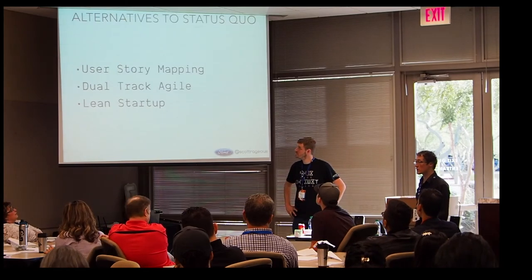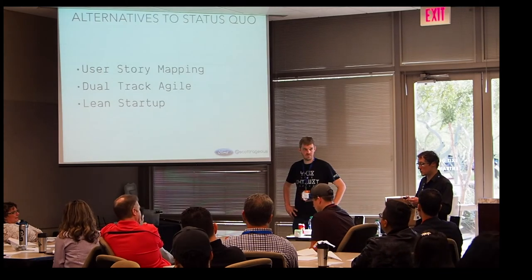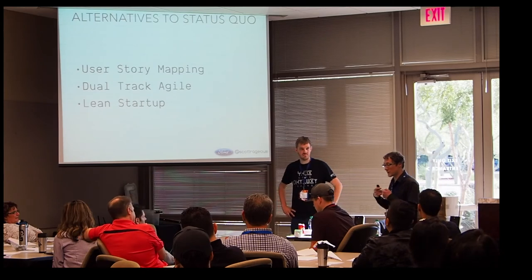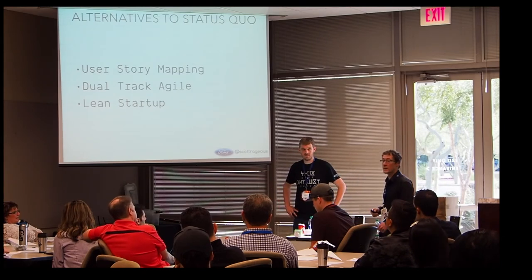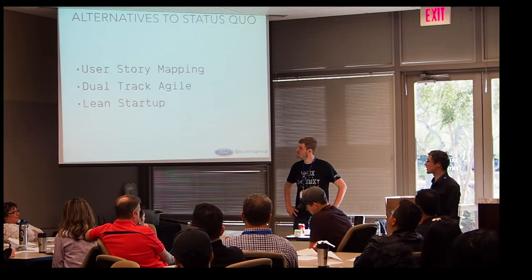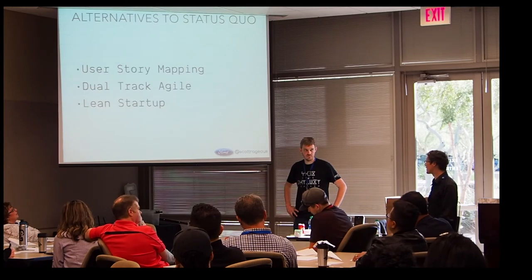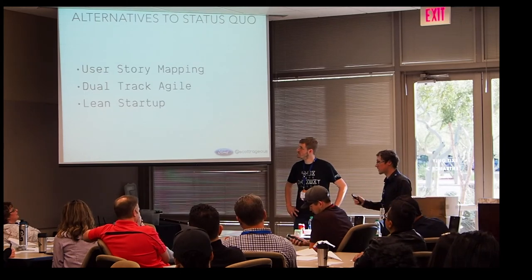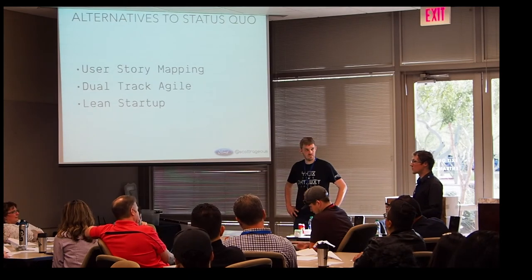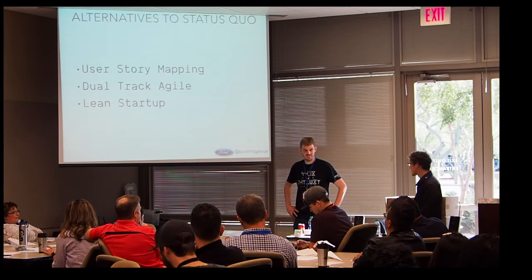There's also dual-track agile, where engineers and designers are pairing up — for one sprint they're doing discovery, and then for the next sprint they're doing delivery, alternating. That's a great way to do it. And then lean startup, of course — validate your idea before you even write a single line of code. That's how I would summarize it.